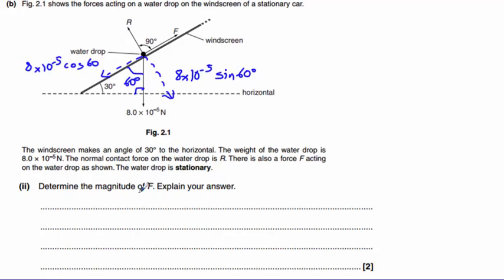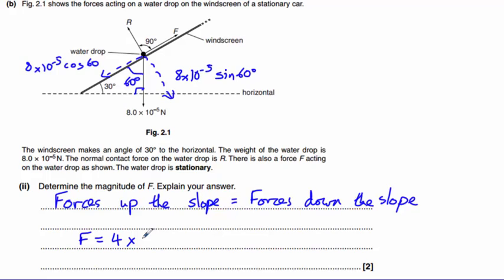Part II asks us to determine the magnitude of F and to explain our answer. Well, the raindrop is in equilibrium which means it's not moving, the water drop is stationary it tells us in the question. So therefore forces up the slope must be equal to forces down the slope, in which case F which is our force up the slope is equal to our force down the slope which we previously calculated to be 4 times 10 to the minus 5 Newtons.